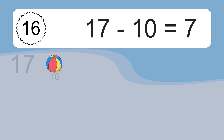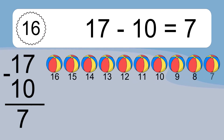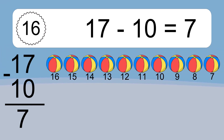17 minus 10 equals what? 17 minus 10 equals 7. Let's count it: 16, 15, 14, 13, 12, 11, 10, 9, 8, 7.